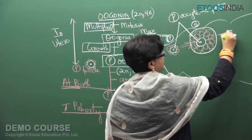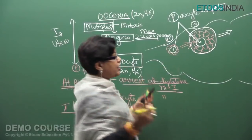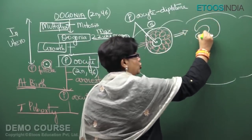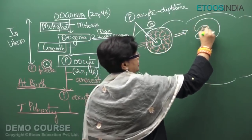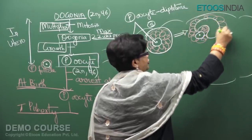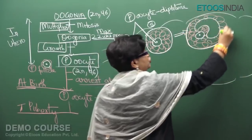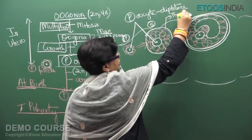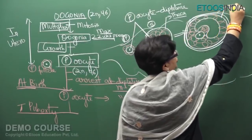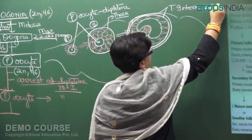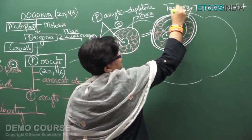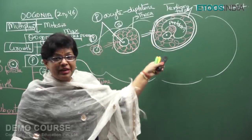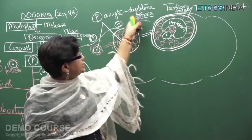Every month, due to increased FSH, the follicle grows further and a cavity begins to form — this is the tertiary follicle. In the tertiary follicle, the theca layer differentiates into theca interna and theca externa. Importantly, it is in the tertiary follicle stage that the primary oocyte will complete its first meiosis and be converted into a secondary oocyte.